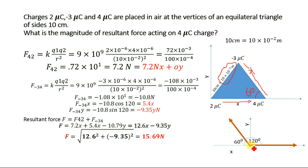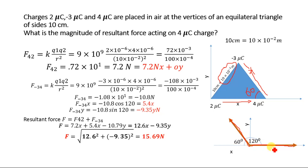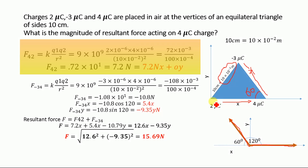Now let's draw a free body diagram. The force acting on the 4 µC charge due to the 2 µC charge is along the x-axis. The force acting on the 4 µC charge due to the minus 3 µC charge is along a direction making an angle of 60 degrees with the x-axis. Let's determine the magnitude of these two forces. The force between 2 µC and 4 µC is F₄₂ = K·Q₁·Q₂ / R².